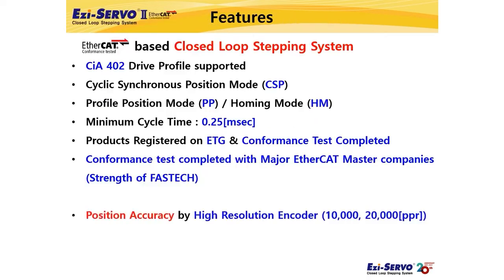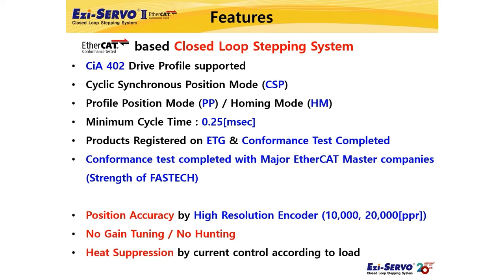A high-resolution encoder is attached to enable precise position control — up to 20,000 PPR resolution encoders can be used depending on motor size. Due to the characteristic of the stepping motor, no separate gain tuning is required, which reduces maintenance effort. Since the holding torque is large, there is no vibration after stopping compared to a servo. Also, easy servo controls the current according to the load like a servo, so it can relatively suppress heat generation compared to conventional stepping motors.